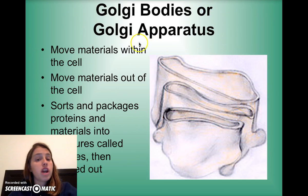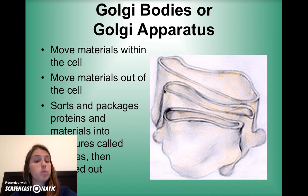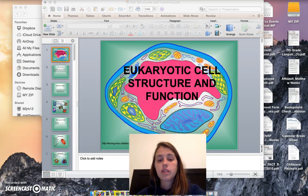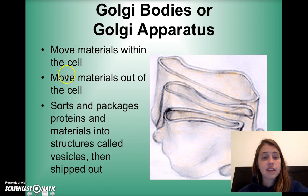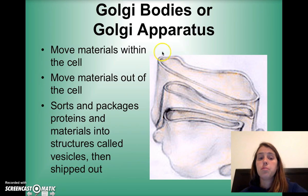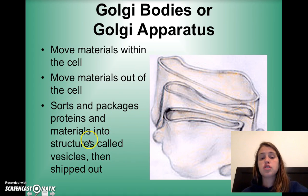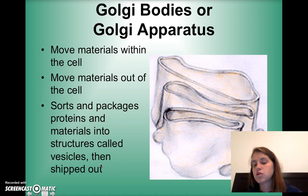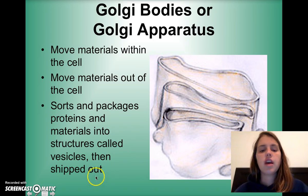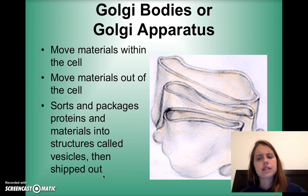The Golgi body, or Golgi apparatus, moves materials within the cell — essentially like the post office of the cell. It allows things to get packed up, organized, and shipped off to wherever they go. It sorts and packages proteins and materials into structures called vesicles, which are like little storage or shipment containers that are shipped out or around the cell.